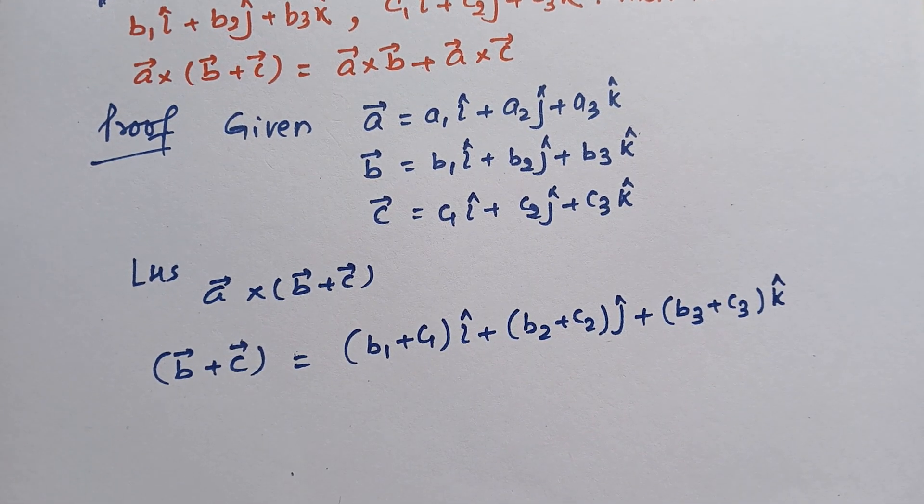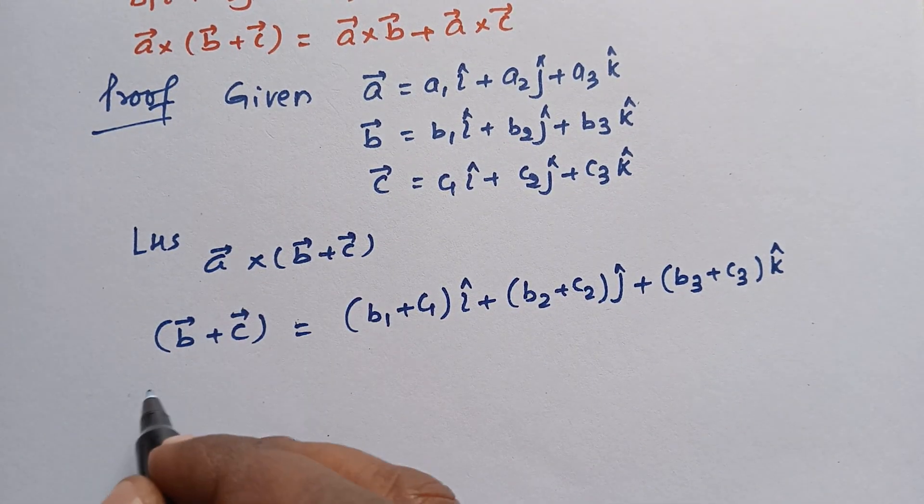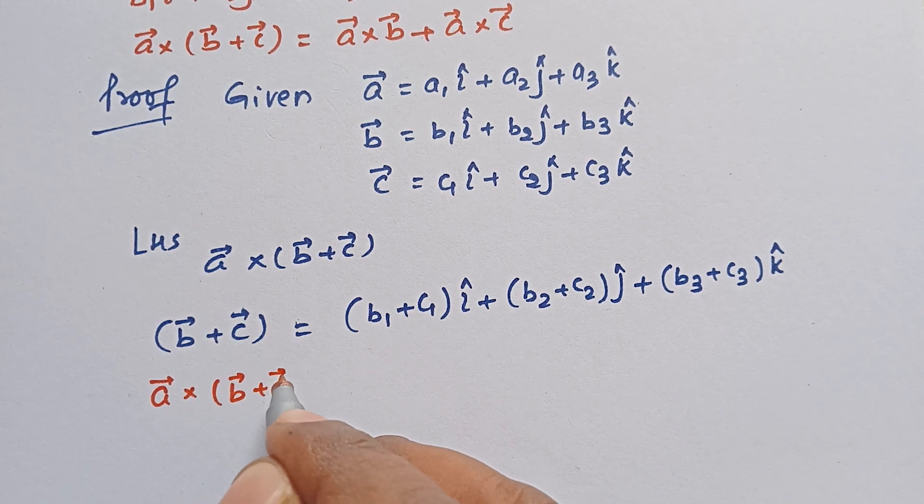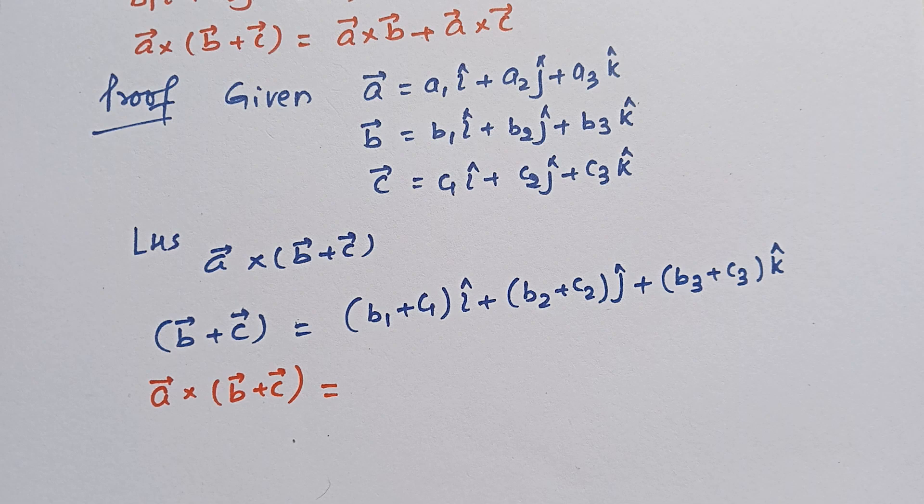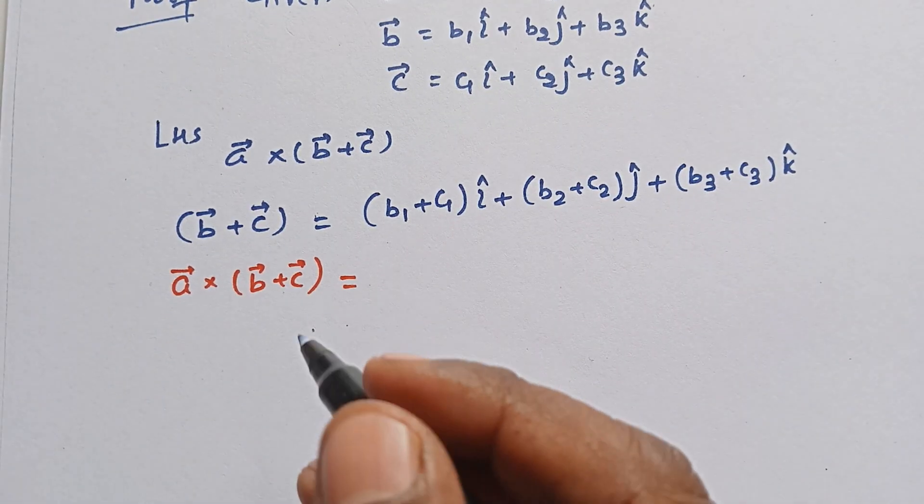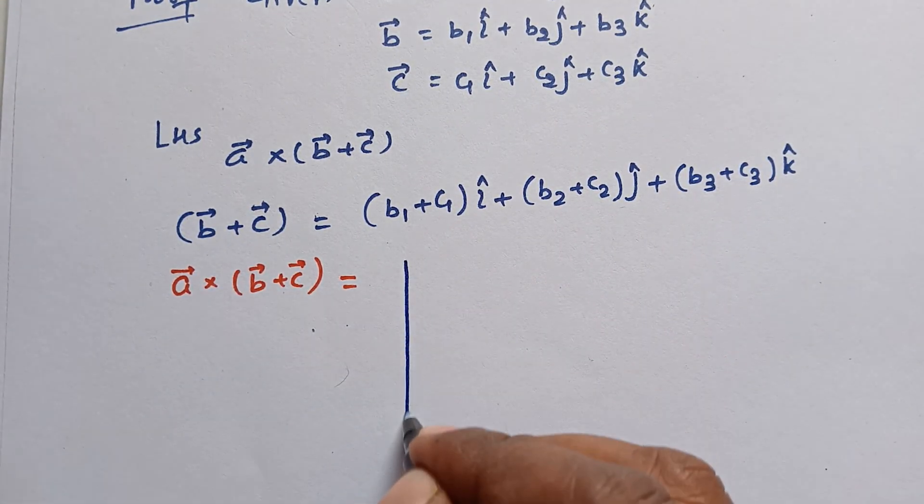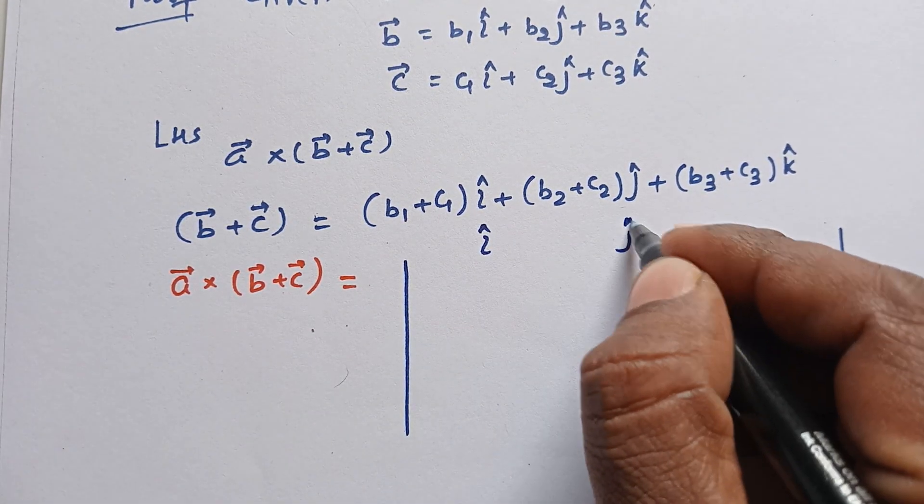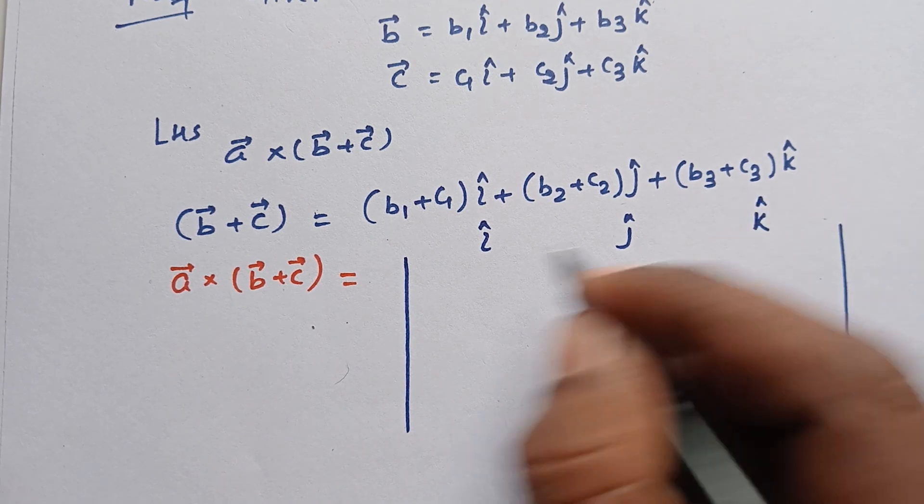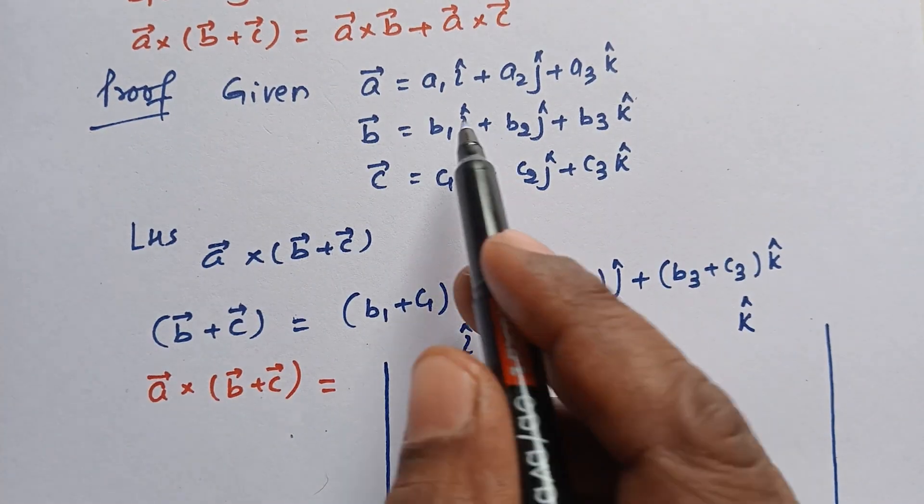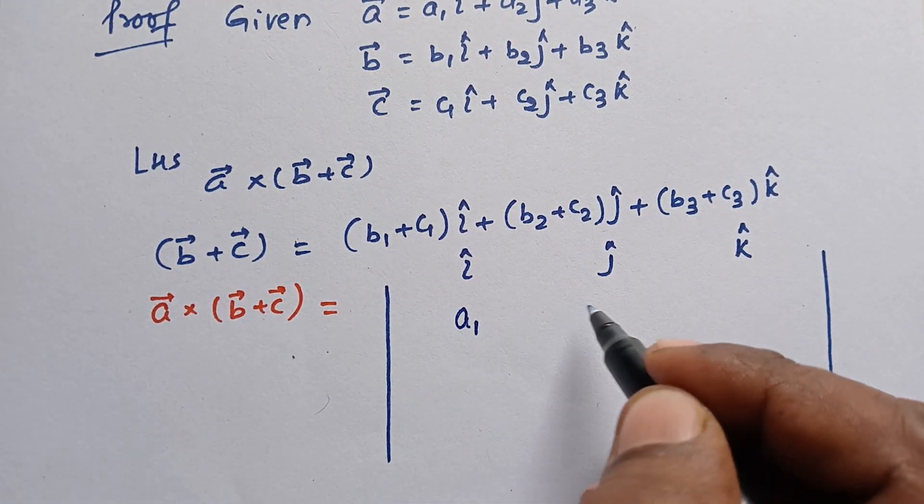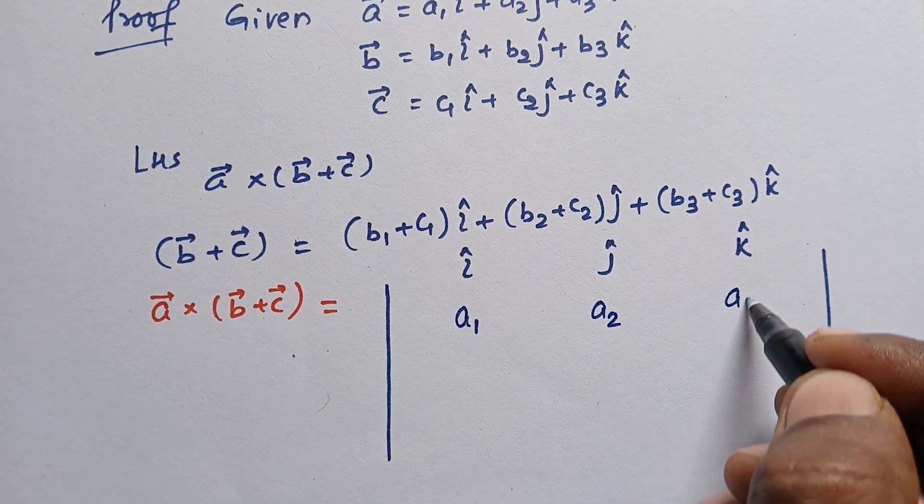This is B plus C. Now we will write the final form: A×(B+C). When we have a cross product, we use a determinant. We write the determinant with î, ĵ, k̂ in the first row, then A values: a1, a2, a3.